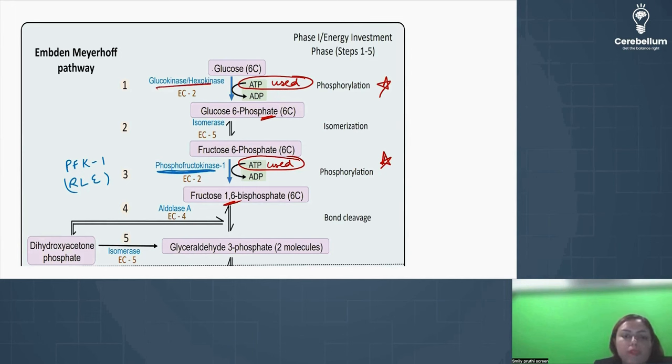Then fourth step is aldolase A. Aldolase A is in glycolysis. We will do aldolase B in fructose metabolism later. Now fructose 1,6-bisphosphate is broken down to DHAP and glyceraldehyde 3-phosphate. Then DHAP also gets converted to glyceraldehyde 3-phosphate, so that we have two molecules of glyceraldehyde 3-phosphate. Just remember that in phase 1, two ATPs are used: one at hexokinase, the other at PFK1.